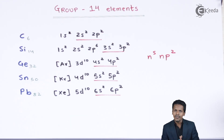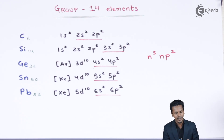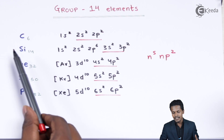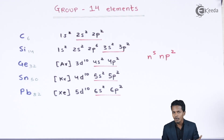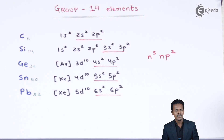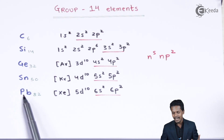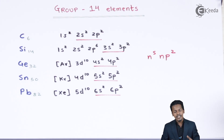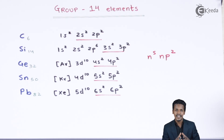Now let us talk about how these elements are classified. Carbon and silicon are non-metals. Germanium is a metalloid and is used in semiconductors. Tin and lead are metals. This shows that the P-block has a variety of element classes — metals, non-metals, and noble gases.